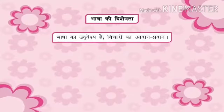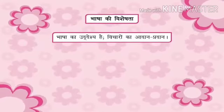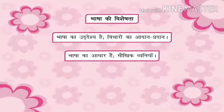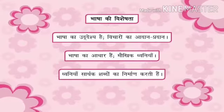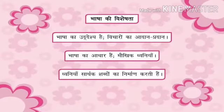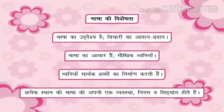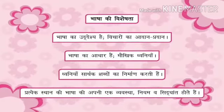Bhasha ki vishishitaen: Ek, bhasha ka uddesh hai vicharon ka aadaan pradaan. Do, bhasha ka aadhar hai mukhik dhwaniyaan. Teen, dhwaniyaan saarthak shabdon ka nirmaan karti hain. Chaar, pratyek sthan ki bhasha ki apni ek vyavastha, niyam aur siddhant hote hain.